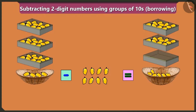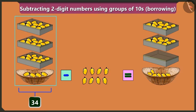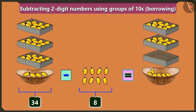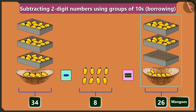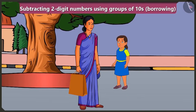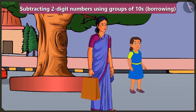So thirty-four minus eight equals twenty-six mangoes. You are absolutely right, Bubbly. Come on, let us now go to buy milk. Let's go!